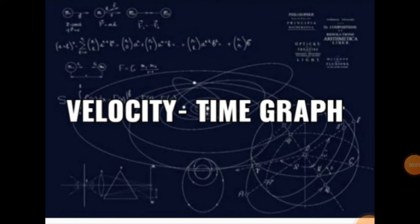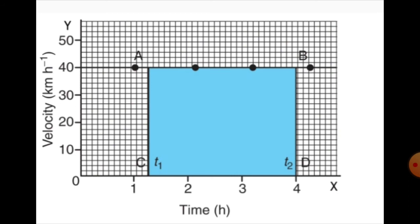Now let us move on to the topic: velocity-time graph. The variation in velocity of an object with time can be represented by a velocity-time graph. In the graph, time is represented along the x-axis and the velocity is represented along the y-axis. If the object moves at uniform velocity, a straight line parallel to the x-axis is obtained.